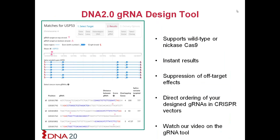Another tool we've developed to minimize off-target effects is the DNA 2.0 guide RNA design tool. This tool can be used to design guide RNAs for wild-type Cas9 or the nickase mutant Cas9. After entering your gene or region of interest, you get instant results with your guide RNA sequences and a target specificity score. This proprietary algorithm scans the genome for your 20-base pair sequence and the possibility of it occurring elsewhere. You can design guide RNAs and directly order them in a vector in less than three minutes. Please watch our video on the guide RNA design tool for more details.